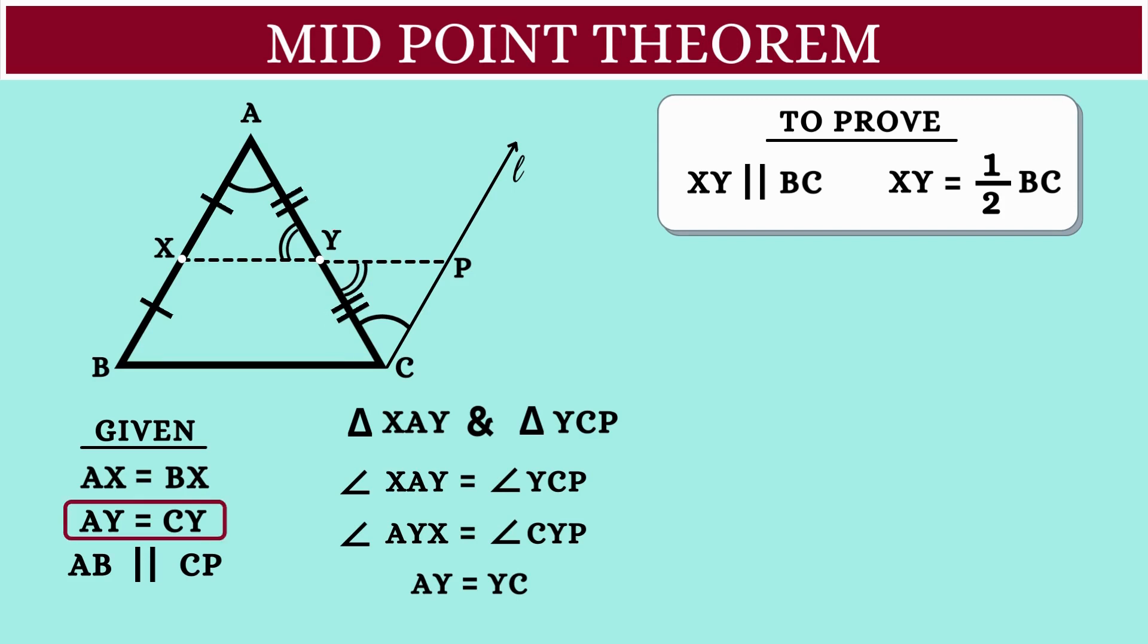This means according to angle-side-angle congruence property, triangles XAY and YCP are congruent to each other. And since they are congruent, we can conclude that the corresponding sides will be equal.